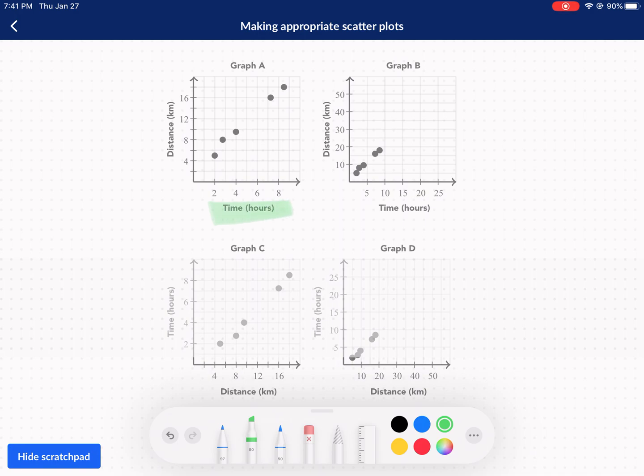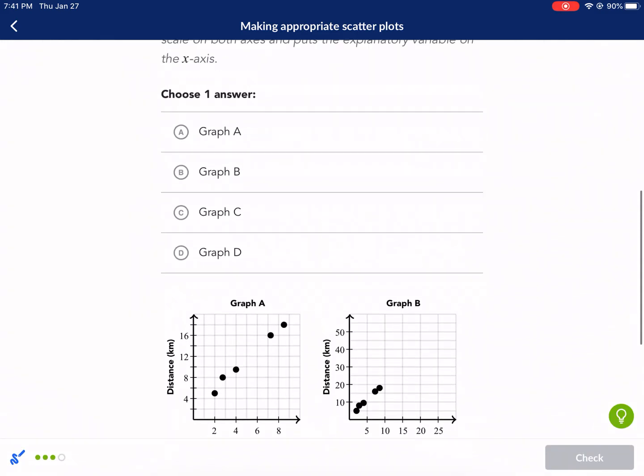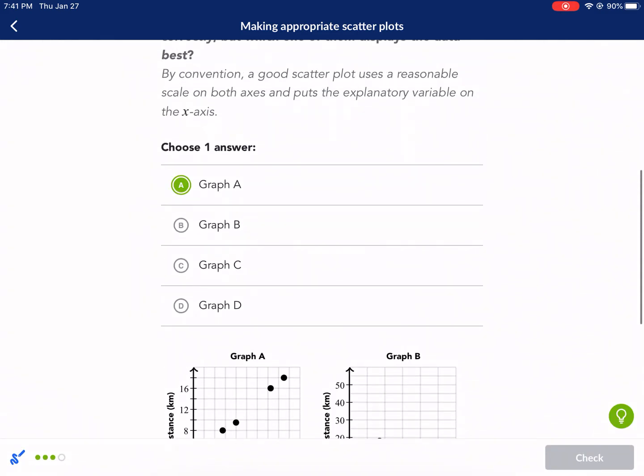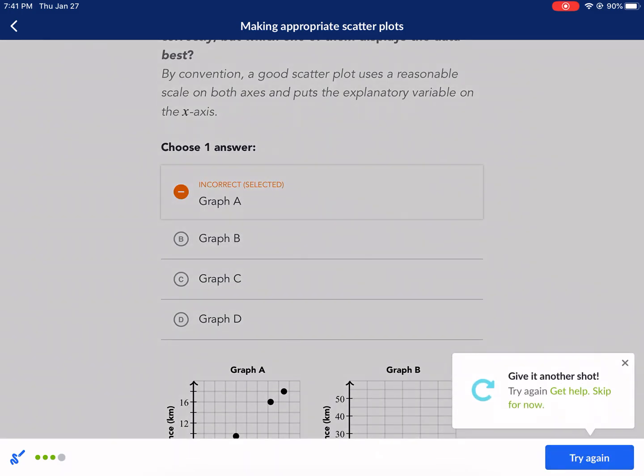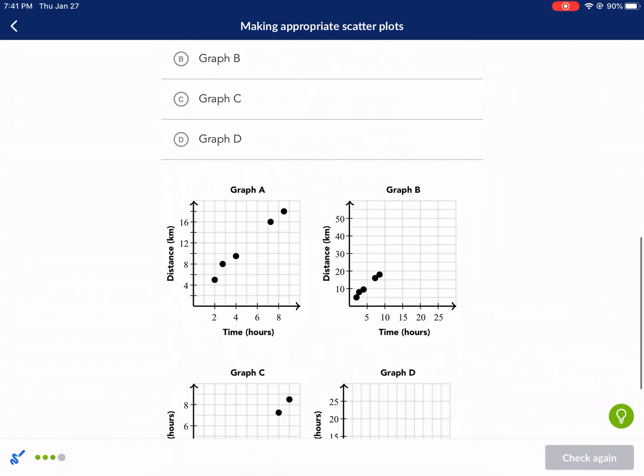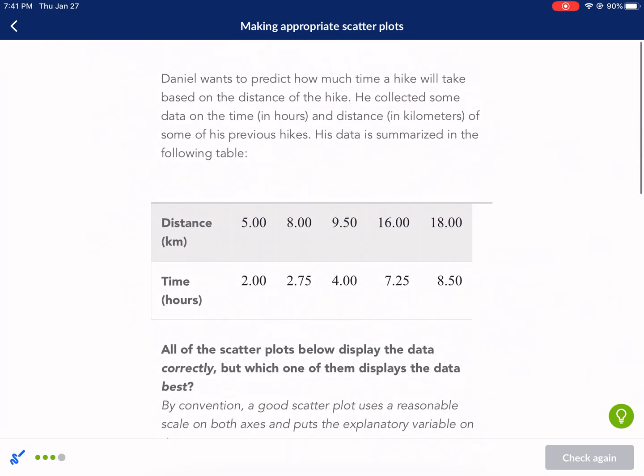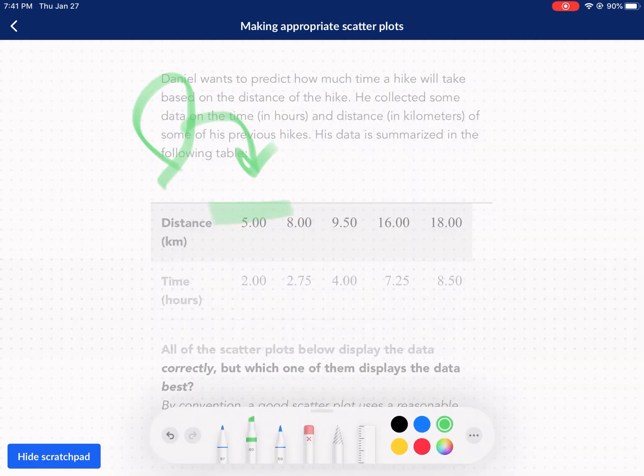The distance you travel is going to be dependent upon how long you do it. Graph A is going to be our answer. And that's really all there is to it. Making appropriate scatter plots. Hope you enjoy this Khan Academy. What? Hold on. Maybe I need to read this one a little more closely. I thought I was golden for sure.